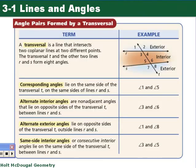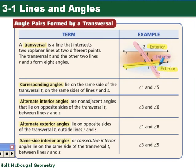Next, we're going to get some more definitions, looking at transversals and lines. A transversal is a line that intersects two coplanar lines at two different points — here our transversal is T. Notice that interior and exterior are identified on the picture. Interior is inside the two lines being transected by the transversal, and exterior is outside those two lines.